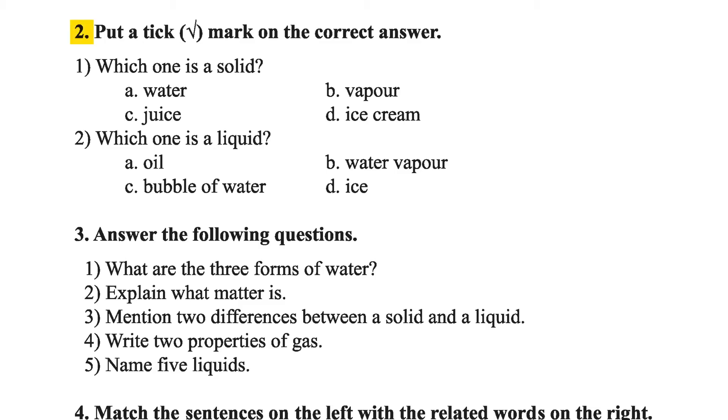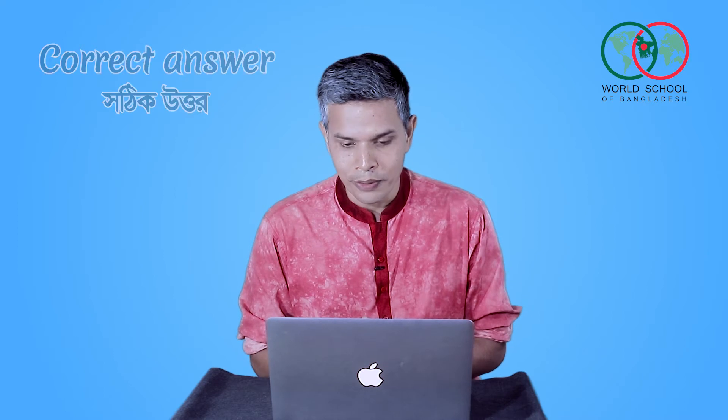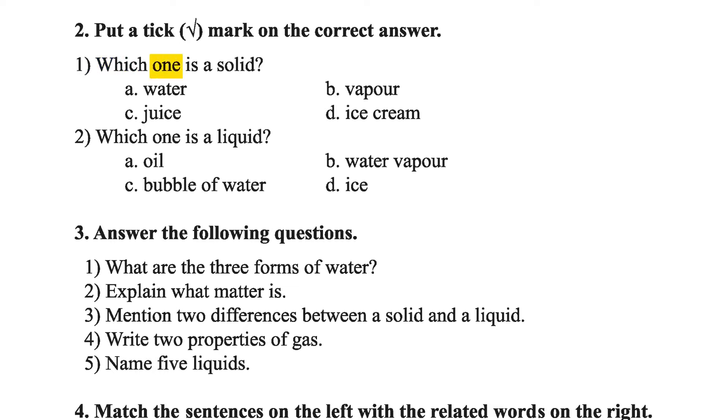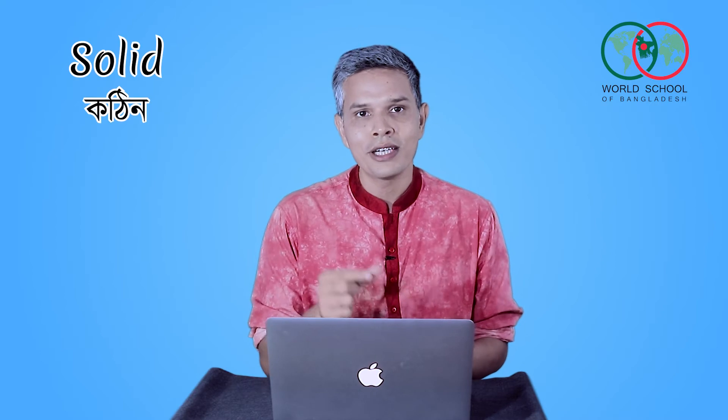Question 2: Put a tick mark on the correct answer. The correct answer — shatik uttor — we put a tick mark beside it. Number 1: Which one is a solid? Which one means which one? And solid means which one? Which one is a solid? Which of the following options is a solid?